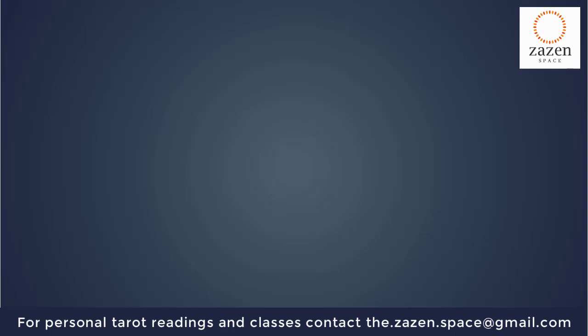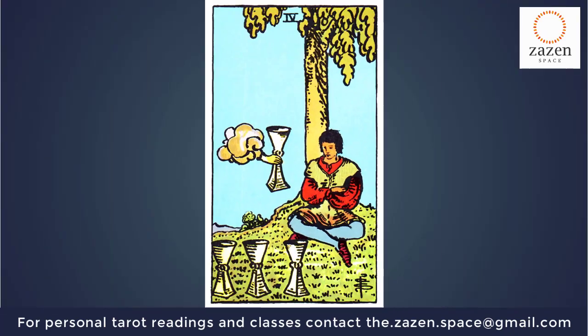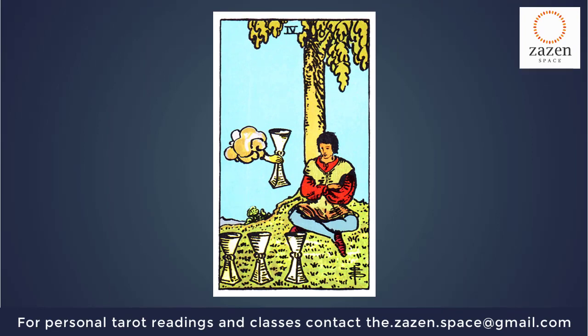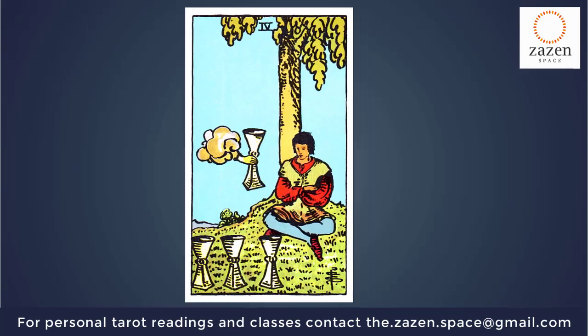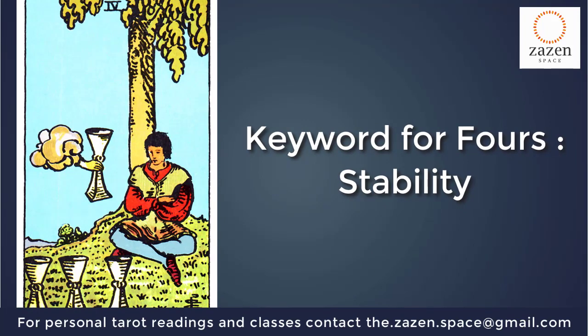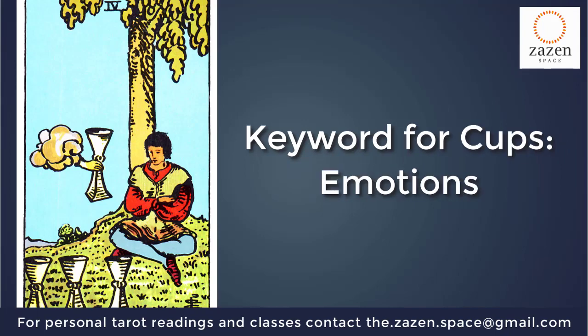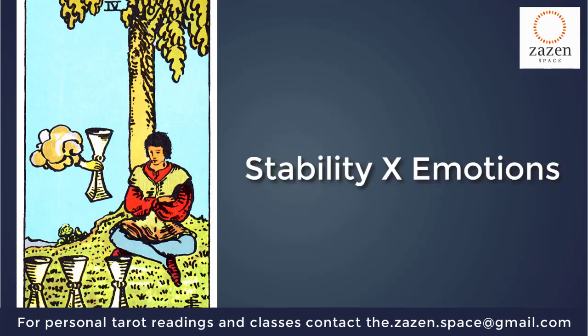Welcome to Zazan Tarot Space. The card we have today is a very interesting card — it is the Four of Cups. In our lecture series on the fours, we saw that the number four signifies stability. On the other hand, the suit of cups signifies emotions. In the Four of Cups, these two energies are brought together: the energy of stability and the energy of emotions.